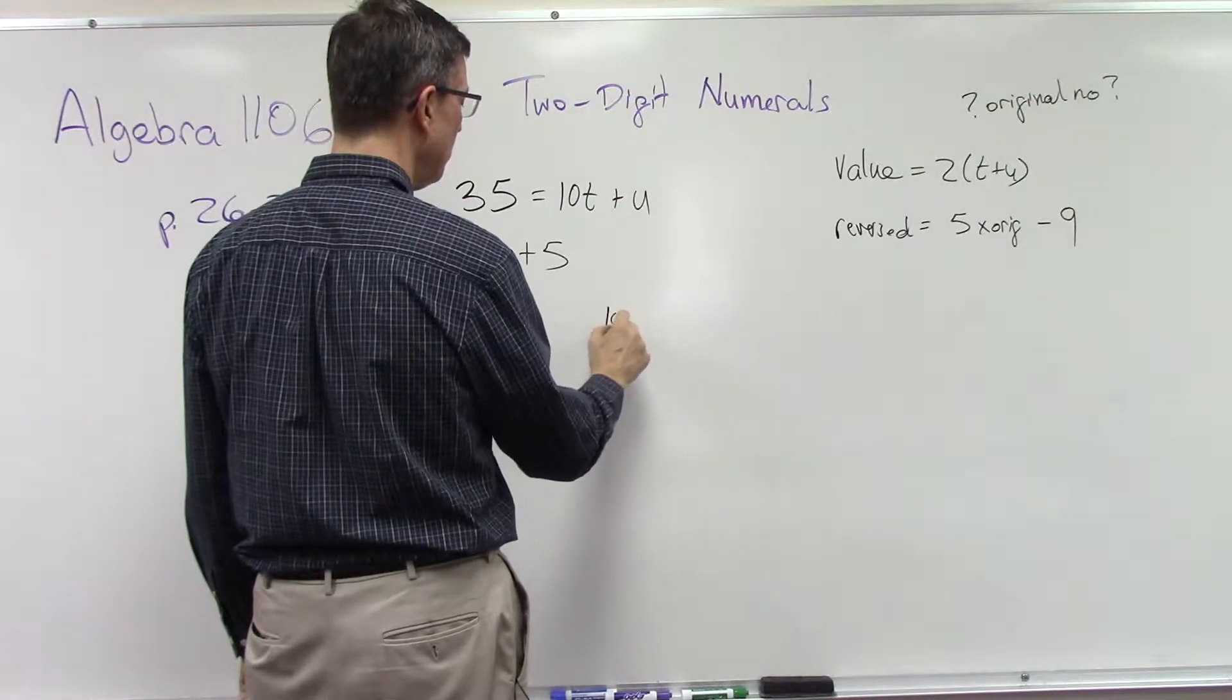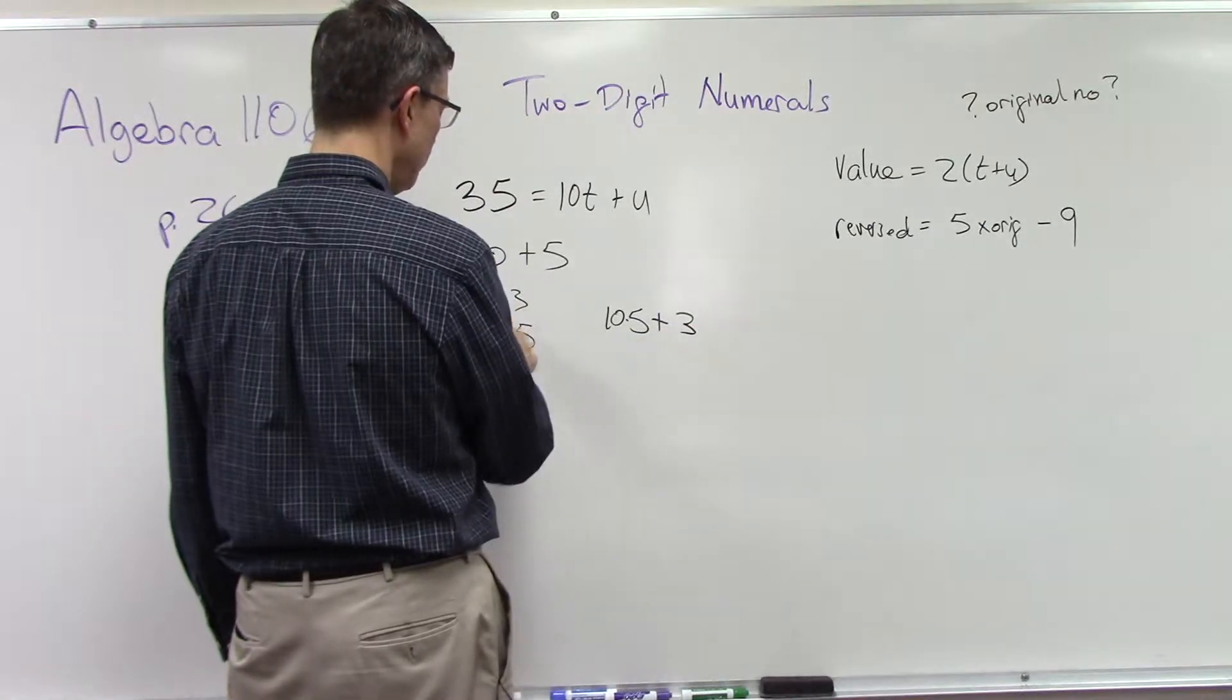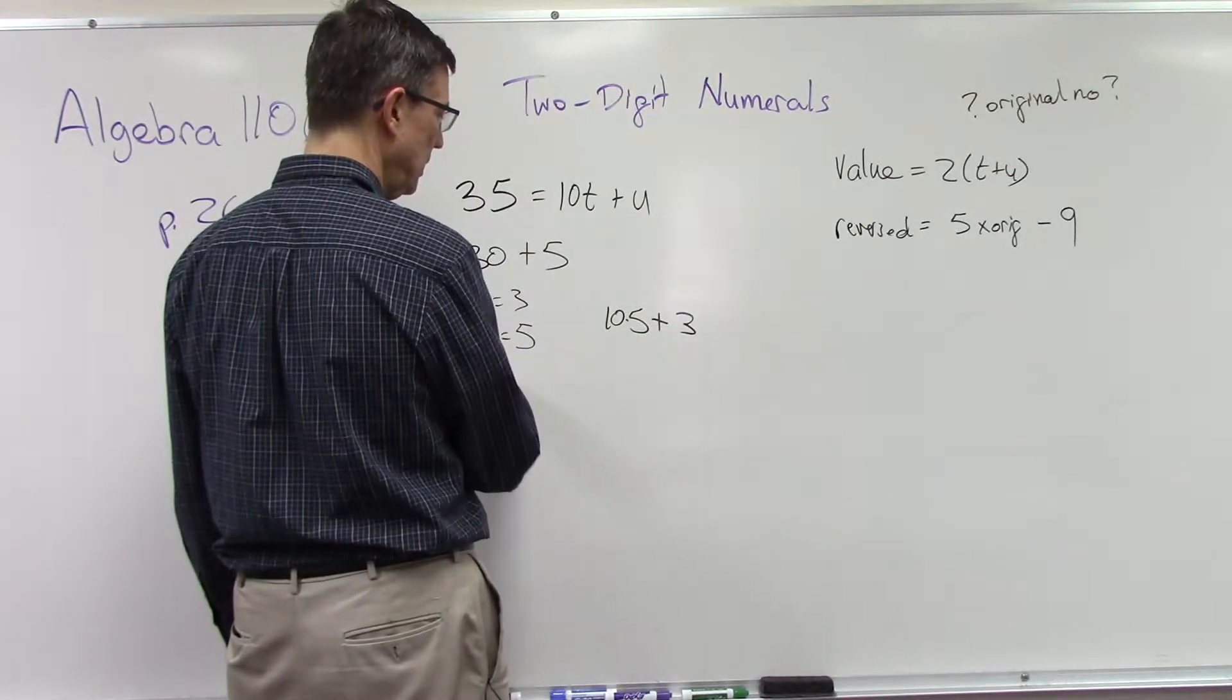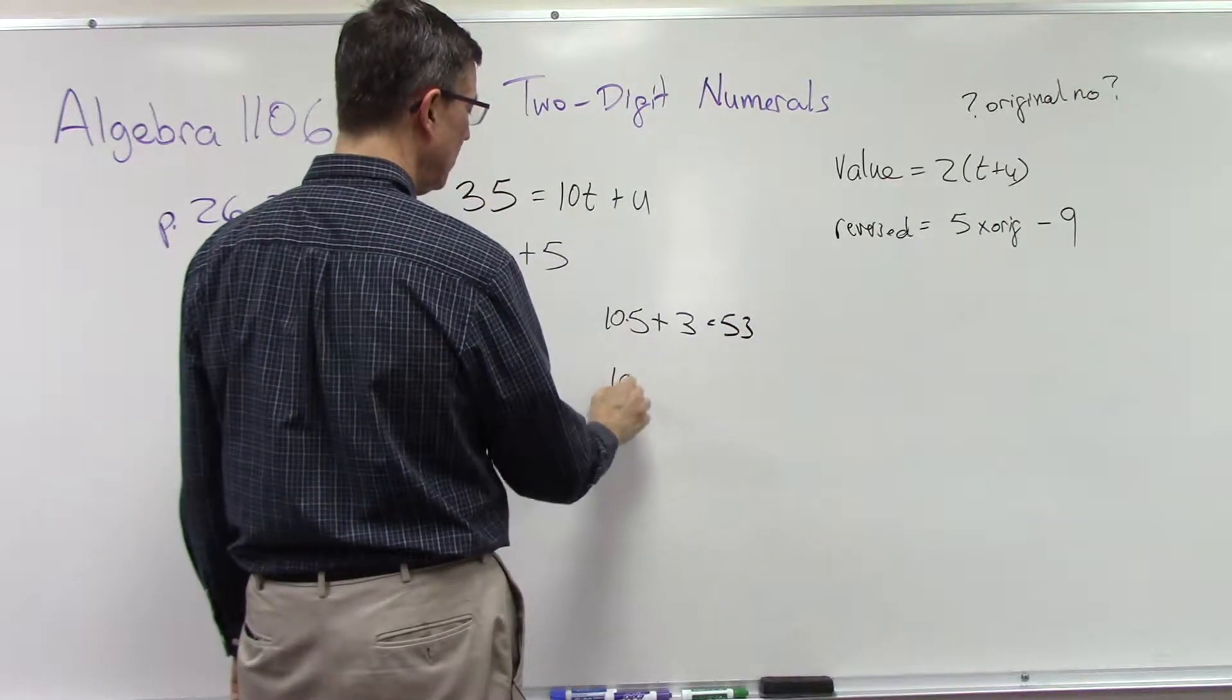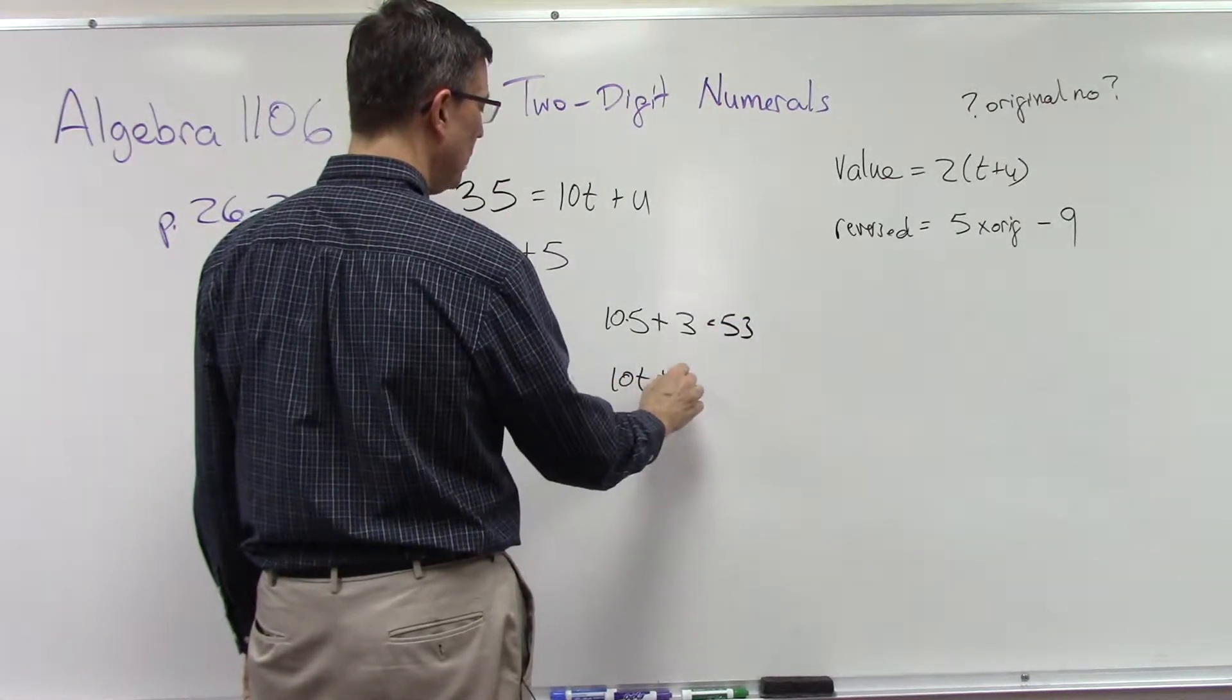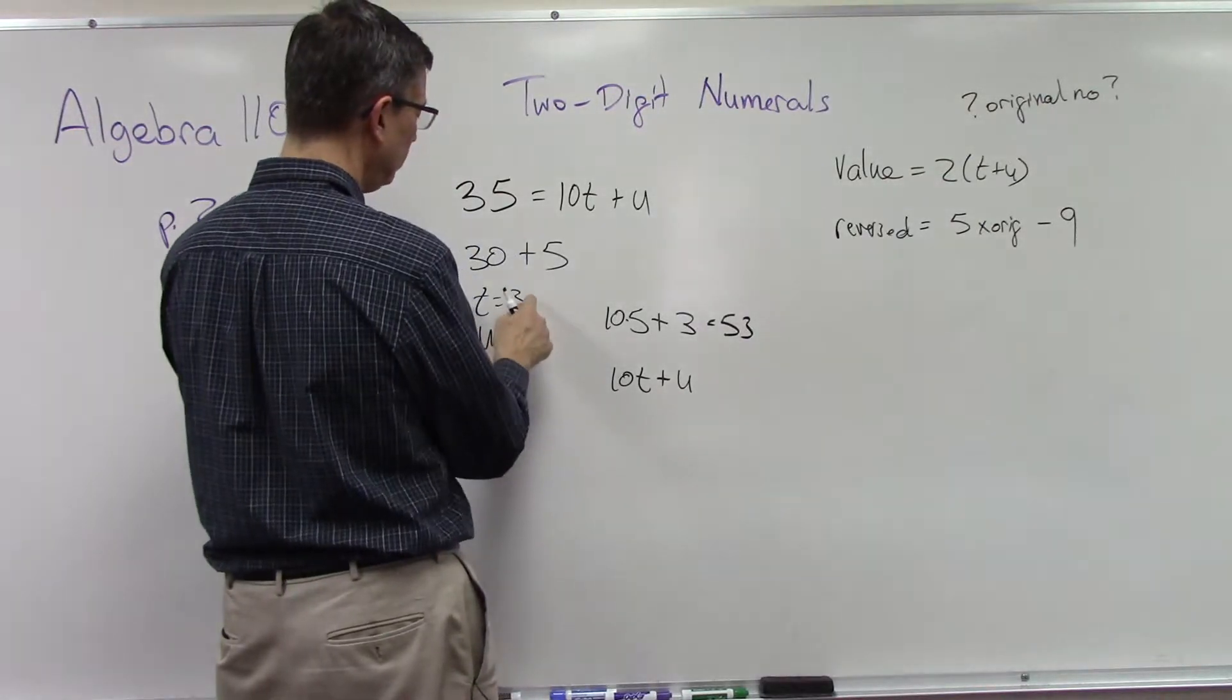And then we're going to add the 3 as being the units digit. So now I would get 53. But notice that the formula still is 10t plus u, but now I've reversed. Okay, so what was the 3?